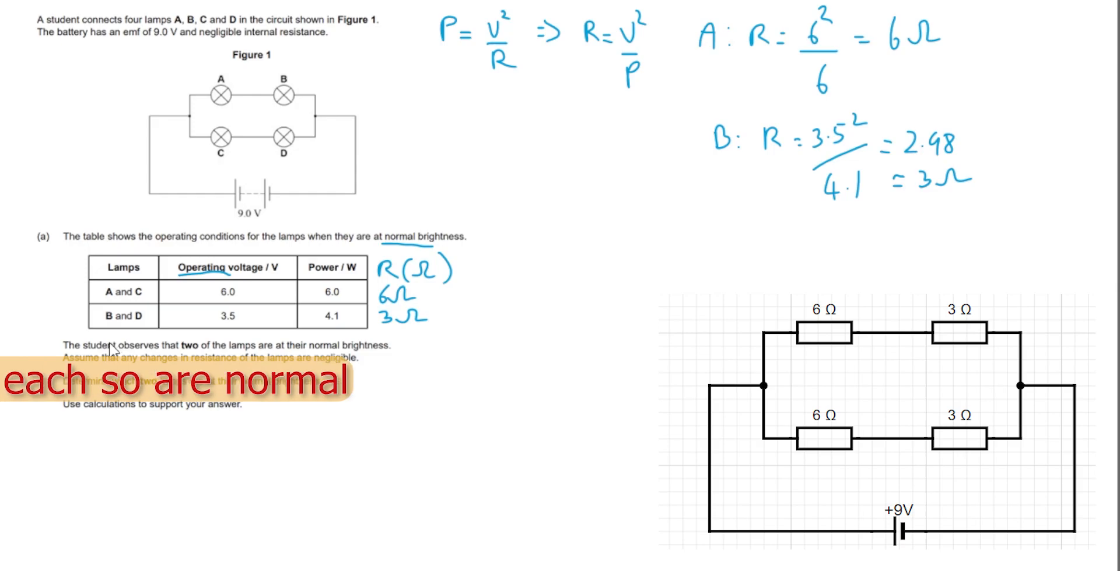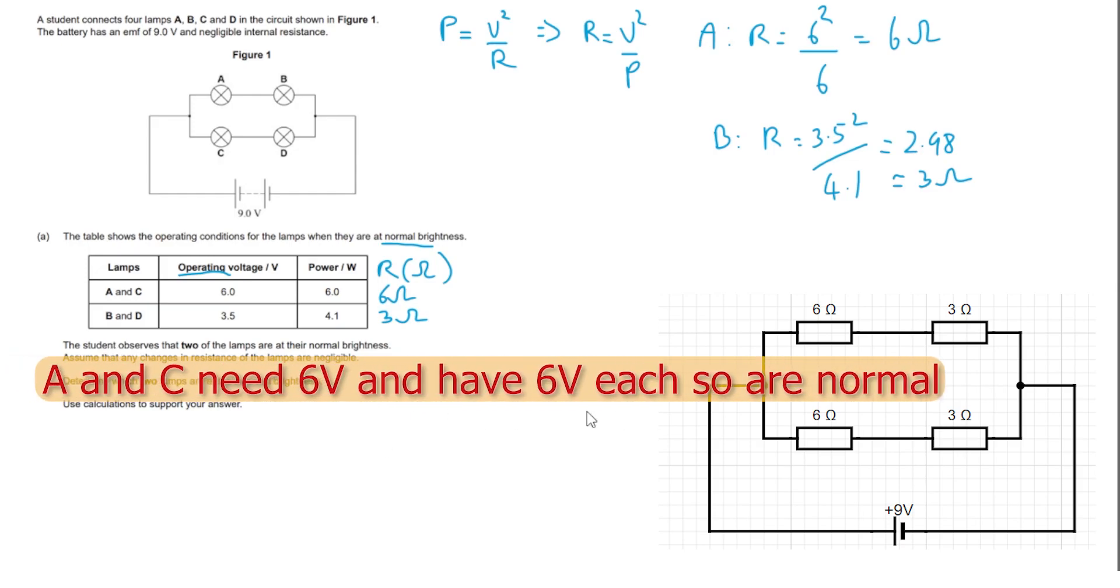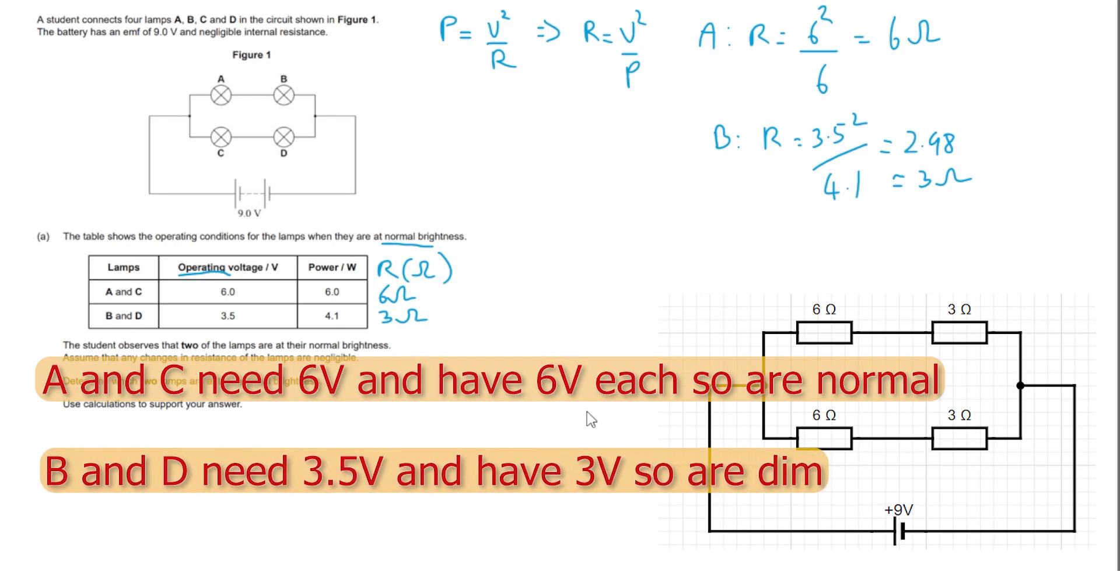So A and C have six volts across them and need six volts, so they're normal. B and D need three and a half volts but only have three volts, and so B and D are dim.